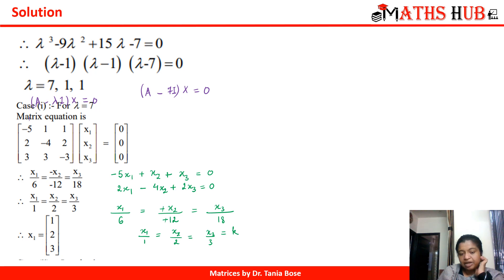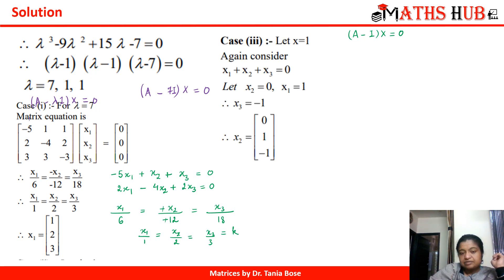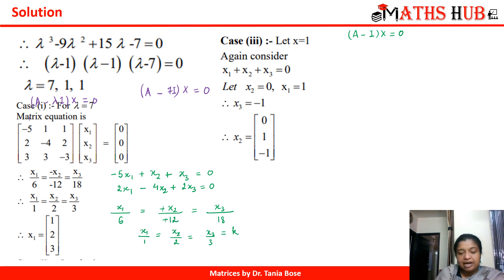So x₁ = k, x₂ = 2k, x₃ = 3k. Dropping the constant k, the eigenvector for lambda = 7 is (1, 2, 3). For lambda = 1, substituting into A minus I times x = 0 gives a single equation x₁ + x₂ + x₃ = 0. With only one equation, we assign x₂ = 0 and x₁ = 1, giving x₃ = −1. So the eigenvector for lambda = 1 is (1, 0, −1). These are our eigenvectors corresponding to eigenvalues 7, 1, and 1.